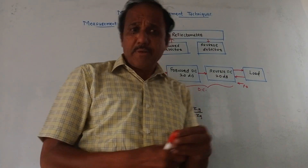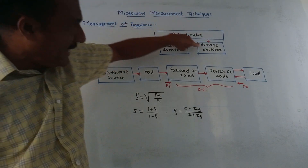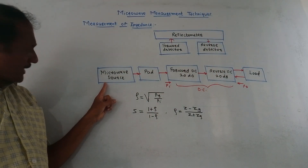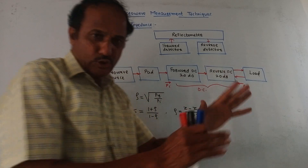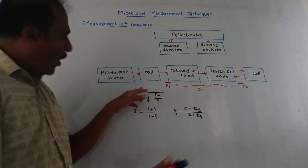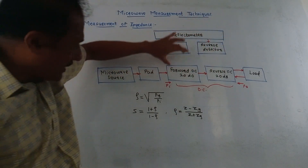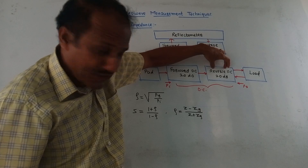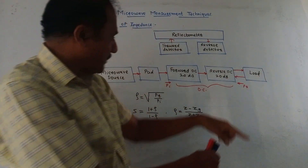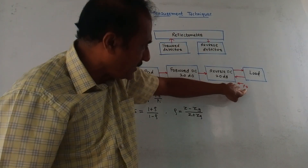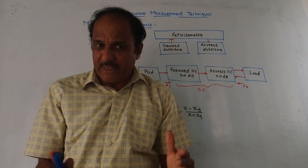The next measurement is measurement of impedance using the reflectometer technique. The basic block of the reflectometer includes a forward detector and a reverse detector. The micro source output is applied to a resistor pad, whose function is to control the signal level of the source. Two directional couplers are used — one forward and one reverse directional coupler. At the output, a load is connected. Incident power PI comes from the source, and reflected power PR comes back from the load.